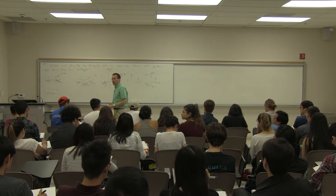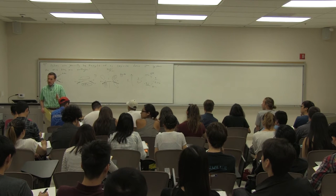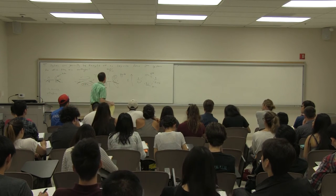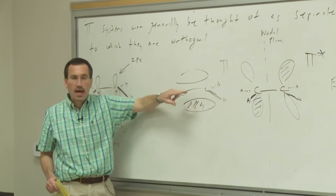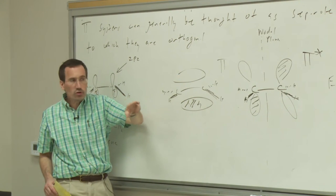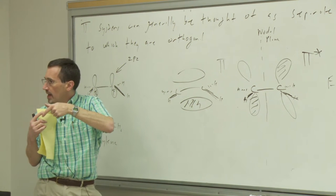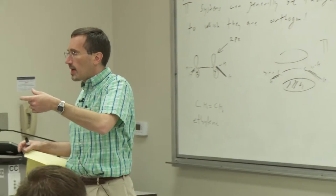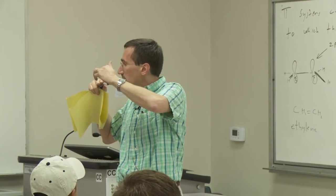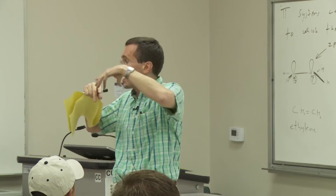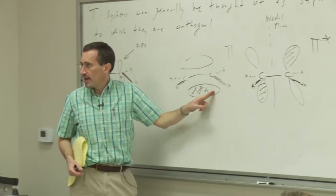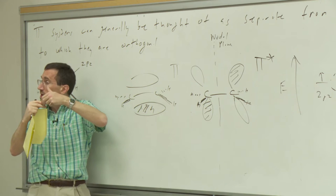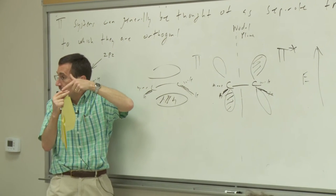Student question: What is the physical significance of phasing? The physical significance of phasing is that you have equal electron density here and here, but when we're trying to overlap molecules and form new bonds, the phasing has to match. When we try to form a new bond and we take a positive phase — shown as white — and a negative phase, and try to overlap them from two different molecules, if there is a mismatch we can't form a bond because we can't share electron density between them.